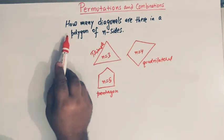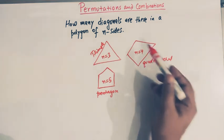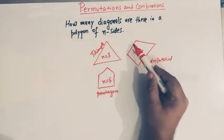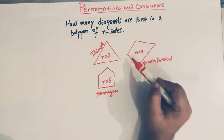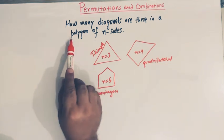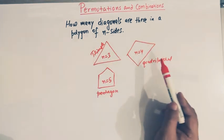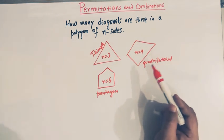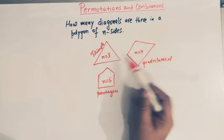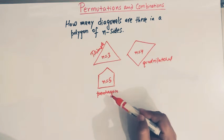A polygon is a closed figure made up of lines. 'Poly' means many and 'gon' means sides. So here we have three polygons: a triangle, a quadrilateral, and a pentagon.